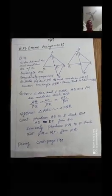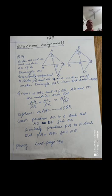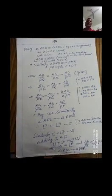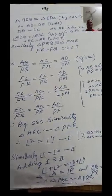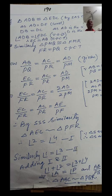Now we will prove these triangles congruent. On page number 189-190, the proof of question 14 is given. We will take the two small triangles ADB and EDC.